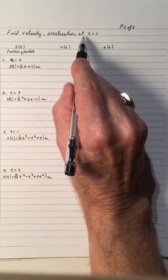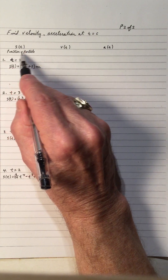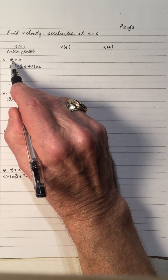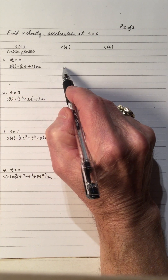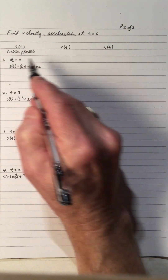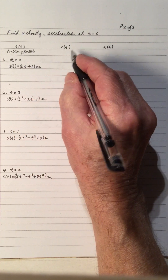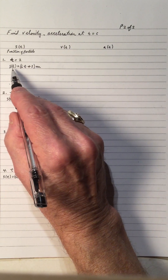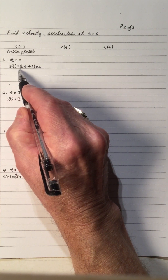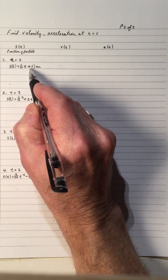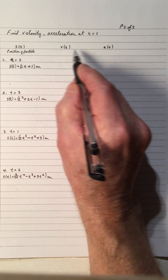Find the velocity and the acceleration at t equals c, so s of t is the position of a particle. We want to find the velocity and the acceleration when the time is 2 in this position function. We just need to find what the acceleration and velocity is.